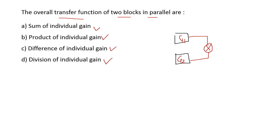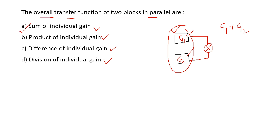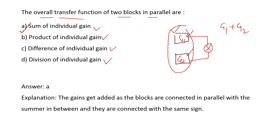For two blocks G1 and G2 connected in parallel, the overall transfer function is the summation of the transfer functions of each block — G1 plus G2. So option A is the right answer: the overall transfer function is the sum of each block gain. The gains add up when the blocks are connected in parallel.